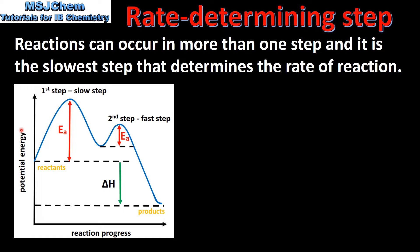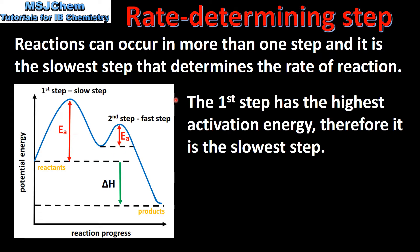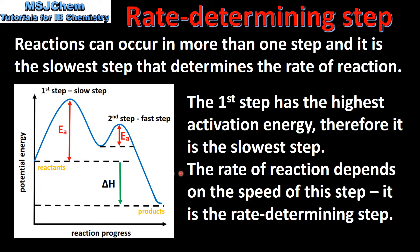Here we have an energy level profile for a two-step reaction. If we compare the activation energy for the first step and the second step, we can see that the first step has the highest activation energy, therefore it is the slowest step. The rate of reaction depends on the speed of this step - it is the rate-determining step.